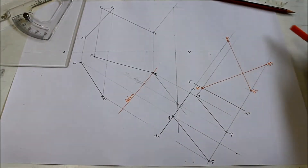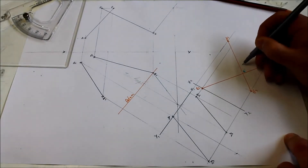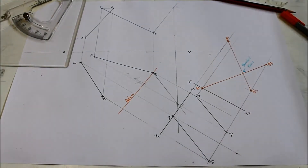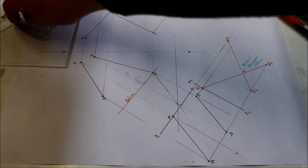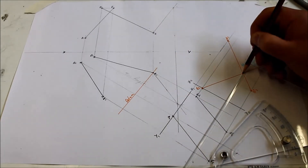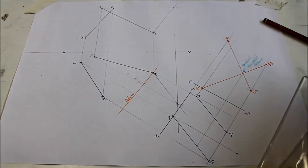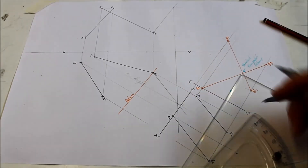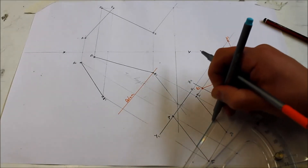Where they intersect gives you the shortest horizontal distance. Project that point back to your auxiliary view. This line here represents the shortest horizontal distance between the two skew lines.